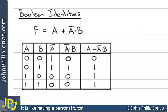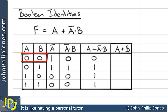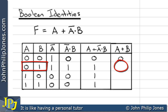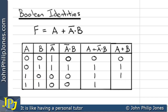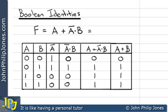That's the truth table complete. I've added an extra column for A OR B. When A is 0 and B is 0, that gives 0. When A is 0 and B is 1, that gives 1. When A is 1 and B is 0, that gives 1. And when A is 1 and B is 1, that gives 1. We can see quite clearly that this column and the F column are identical.